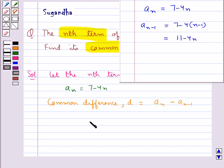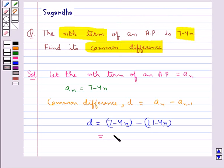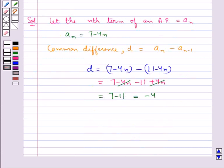Thus we have the common difference D is equal to an, that is 7 minus 4n, minus a(n-1), that is 11 minus 4n. So this is equal to 7 minus 4n minus 11 plus 4n. Now this minus 4n plus 4n gets cancelled and we are left with 7 minus 11 which is equal to minus 4. So we get the common difference D is equal to minus 4.